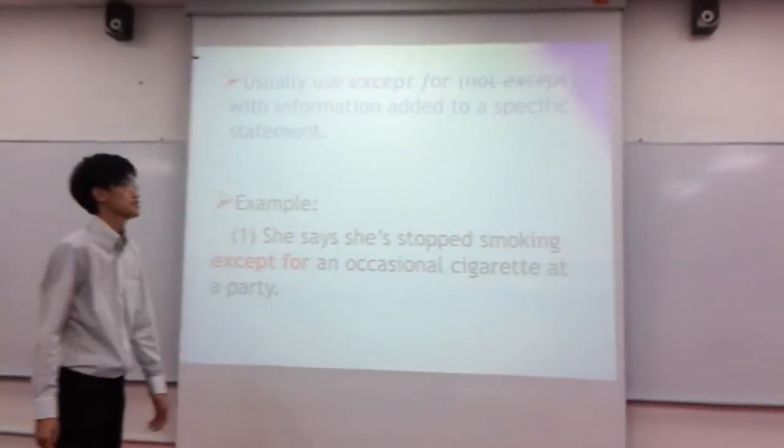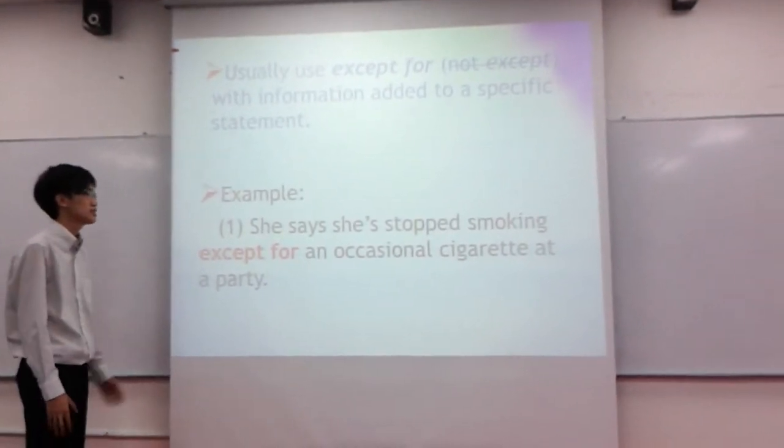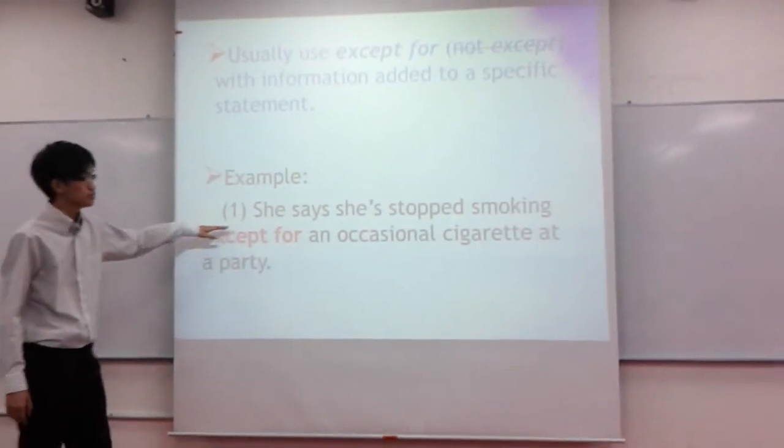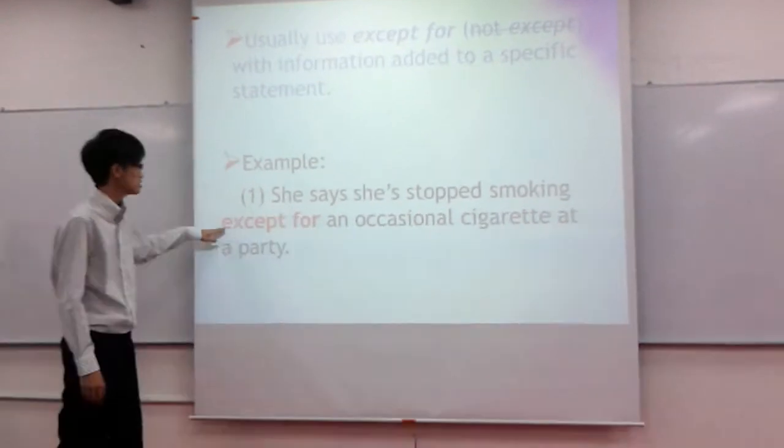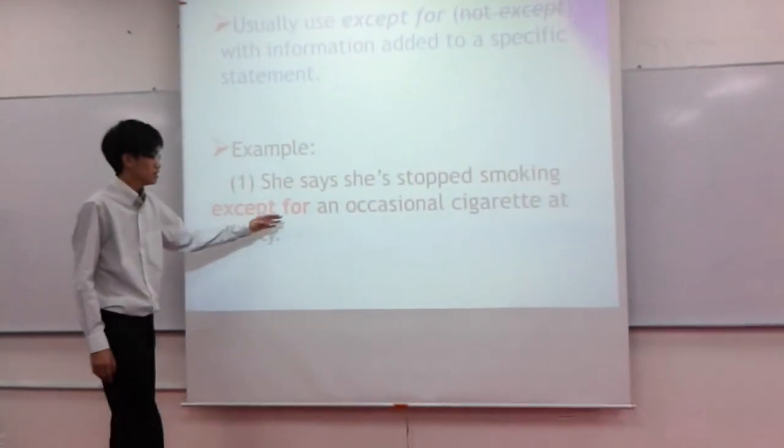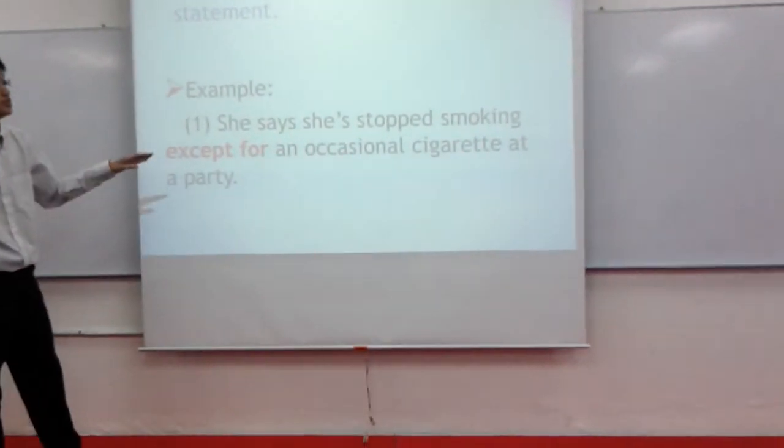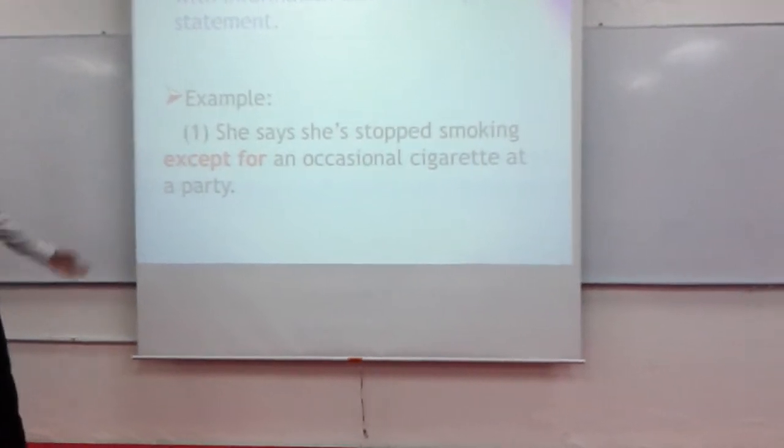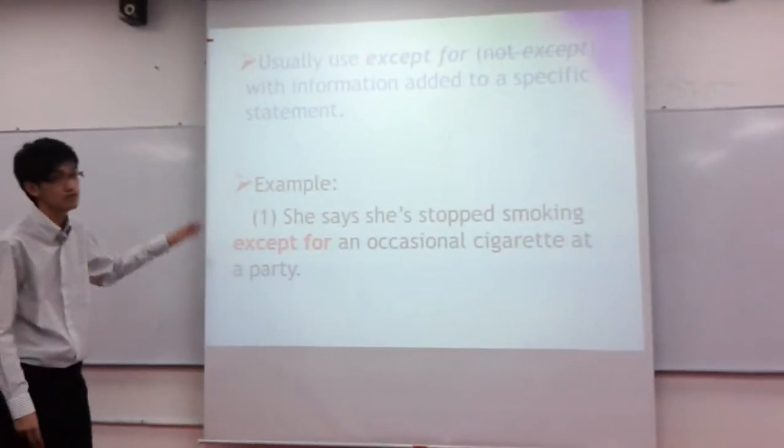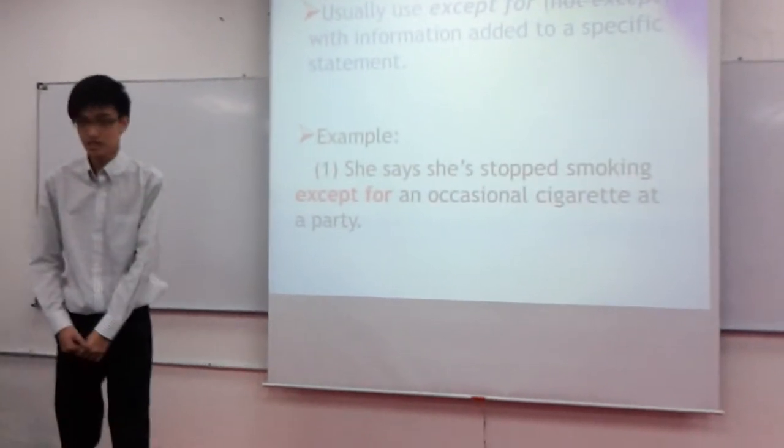We usually use except for, not except with information that was specific. For example, she says she is not smoking except for an occasional cigarette at a party. An occasional cigarette at a party is the additional information. So, whenever we add information to a specific statement, we use except for, not except. Am I clear? Yes!